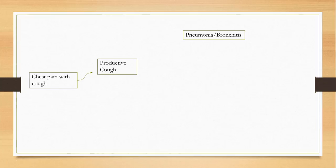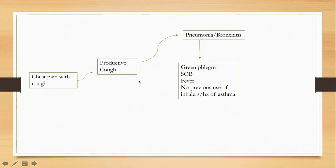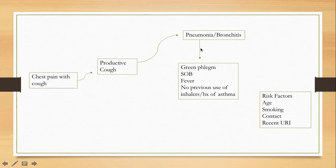These patients have productive cough with green phlegm, and may have some shortness of breath. Usually they don't have a history of asthma if it is a standalone pneumonia. However, patients with asthma or COPD can develop superimposed pneumonia, so that is something to keep in mind.